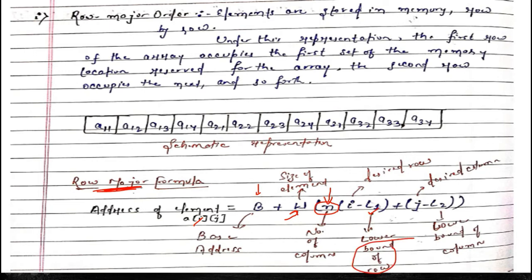Then we add the desired column j minus the lower bound of columns. In row-major formula, we are concerned about number of columns. For example, if rows range from 6 to 10, the lower bound of row is 6. If columns range from 10 to 15, the lower bound of columns is 10.